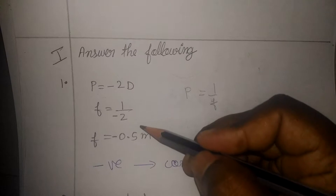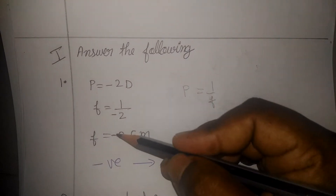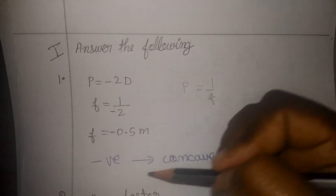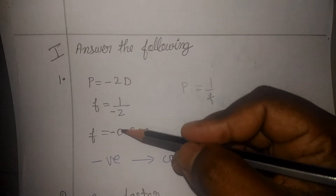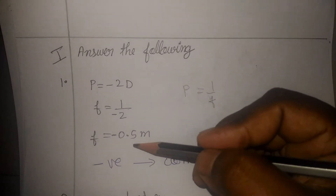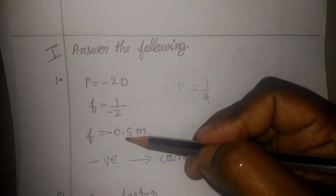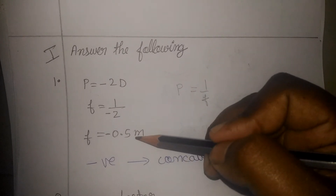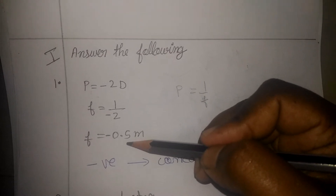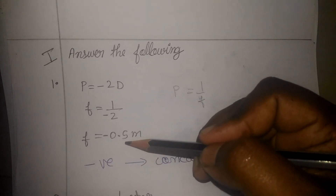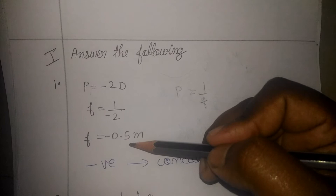So focal length equals 1 divided by minus 2. This minus sign represents a concave lens — a negative lens is a concave lens, and a positive lens is a convex lens. So 1 divided by 2 is 0.5 meter, therefore the focal length is 0.5 meter, or half a meter, which is 50 centimeters.